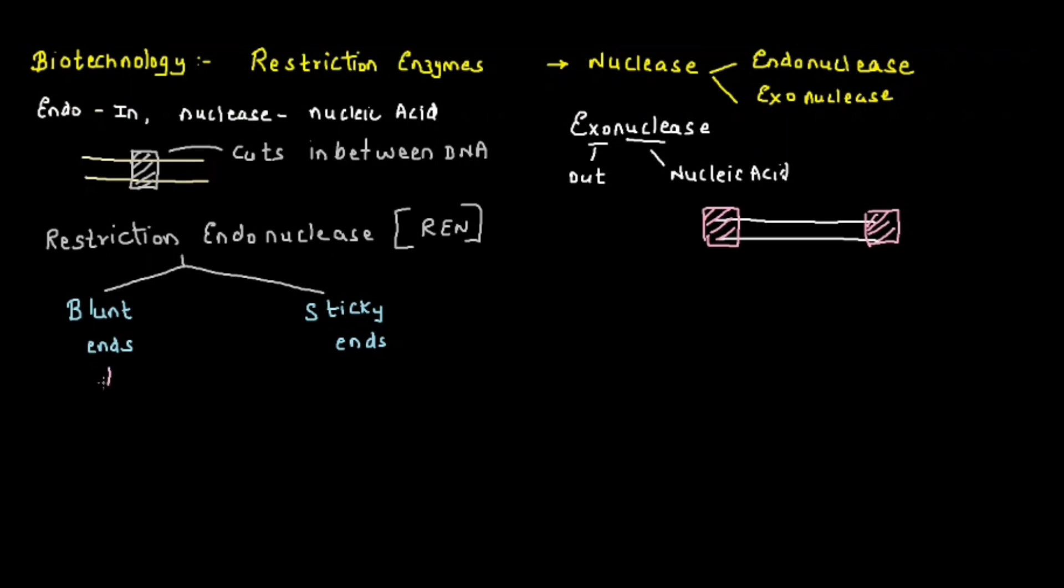These restriction endonucleases produce two types of ends: blunt end and sticky ends. Blunt ends means equal size on both sides, sticky ends means unequal cut. Different types of blunt end enzymes are ALU1, HAE3, SMA1, and EcoR5.